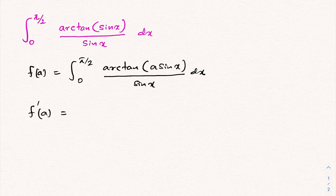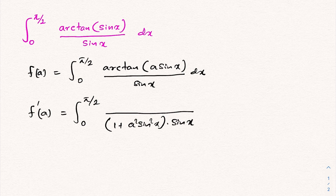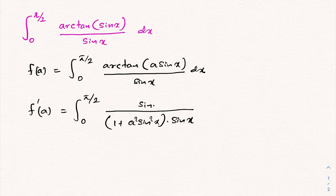So we have F'(a) equal to the integral from 0 to π/2 of the derivative of arctan, which is 1/(1+x²). Instead of x we have a·sin x, so we have 1/(1 + a²·sin²x) times sin x, and by the chain rule we multiply by the coefficient of a, giving sin x in the numerator. Then sin x cancels.